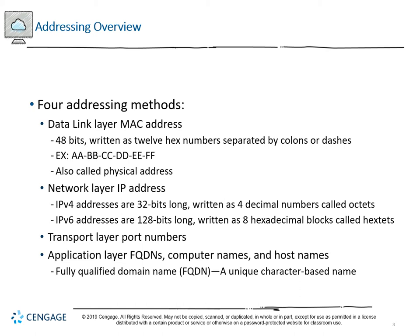Transport layer port numbers are where we start talking about things like HTTP using port 80, or port 443 for secure traffic. Then we get to layers 5 through 7. These are technically established at layer 7, the application layer, but we do see them passed up and down through layers 5 and 6.